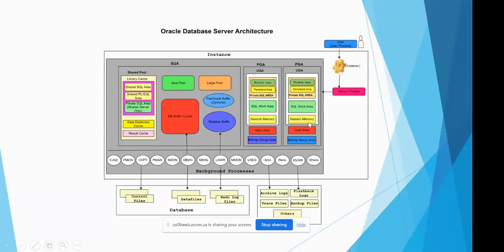The next component inside the PGA is the session memory. It is a small placeholder that holds the user's session information. Every session created in the Oracle database is assigned a unique session ID and a serial hash, which represents each session uniquely in the database. All session-related information is stored inside the session memory.